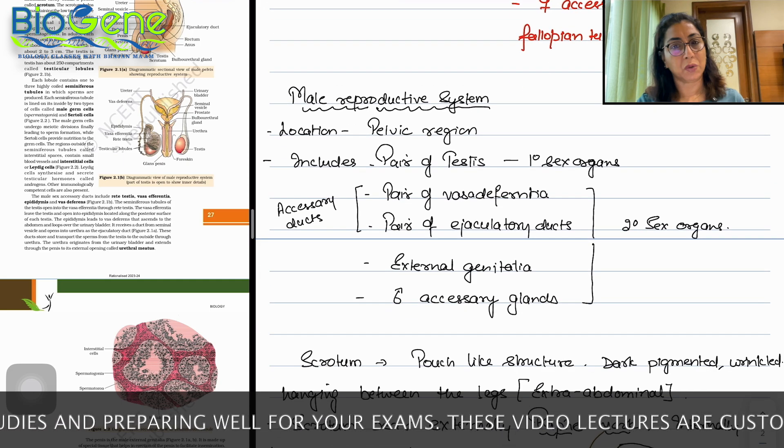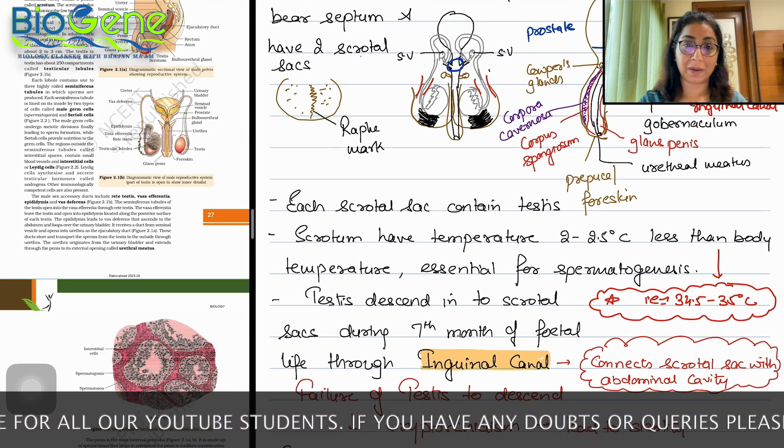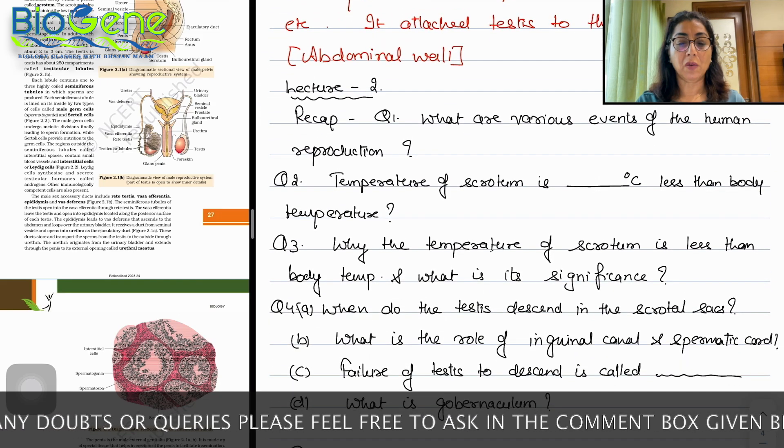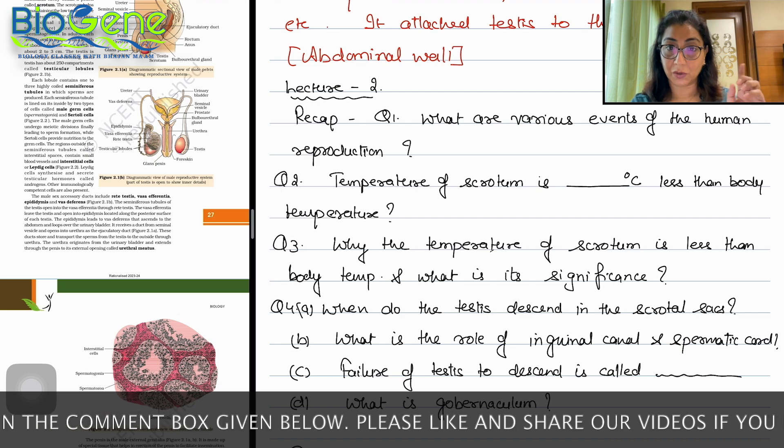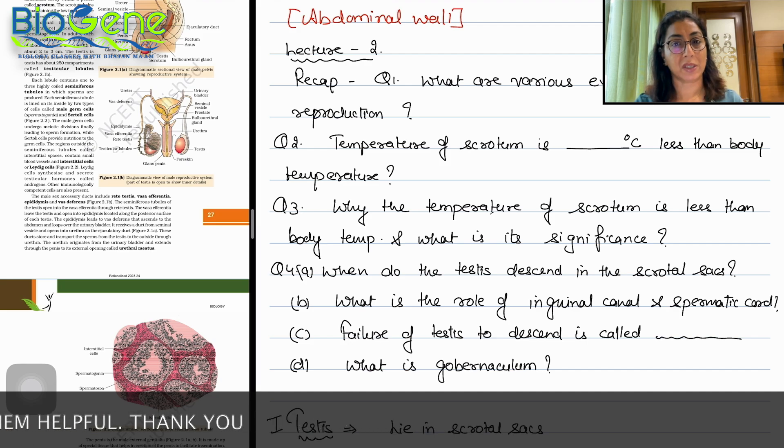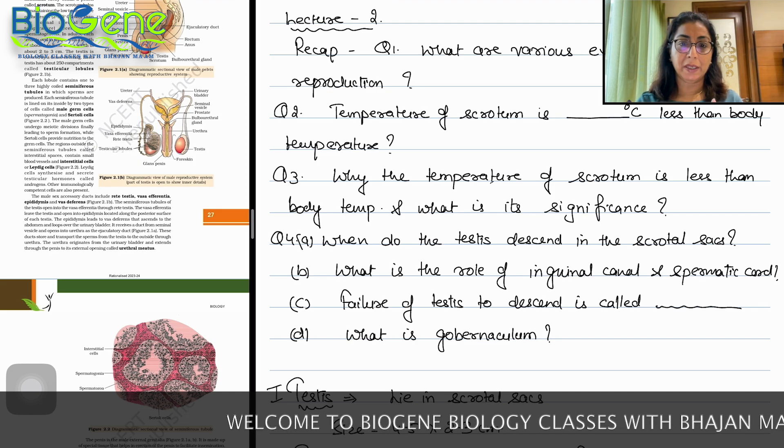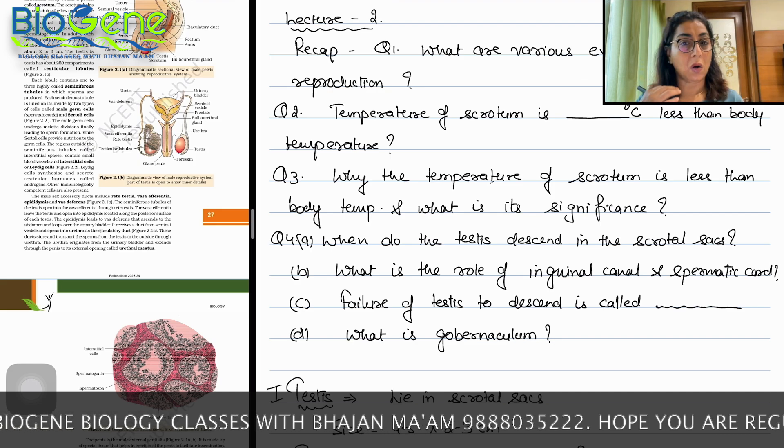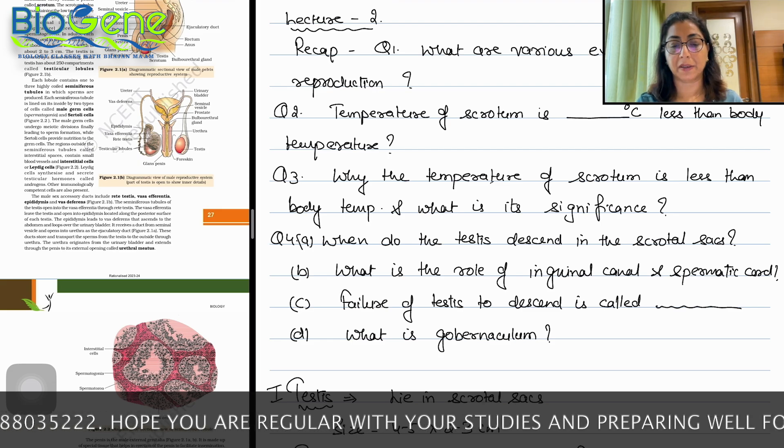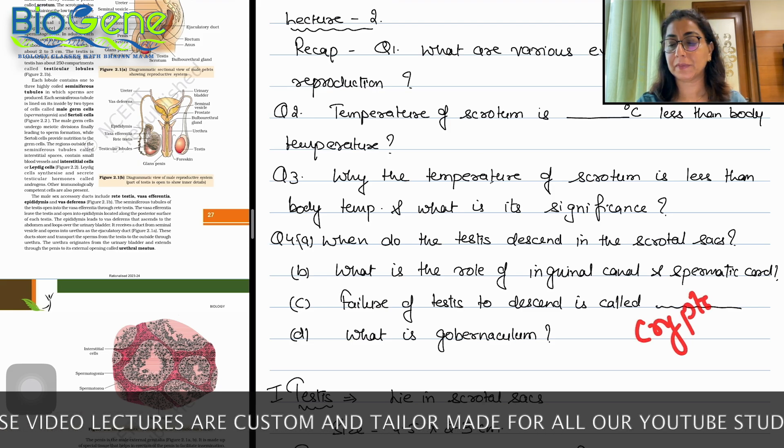If you have two-line questions, you can write them in the description. Otherwise you can simply write the names of the events. Now, temperature of scrotum is dash degree less. I think so 2 to 2.5 degrees Celsius less. Why? Because of the purpose of spermatogenesis. It has viability at that temperature. When do the testes descend in the scrotal sac? It is the 7th month of fetal life. The failure of the testes to descend is called cryptorchidism.